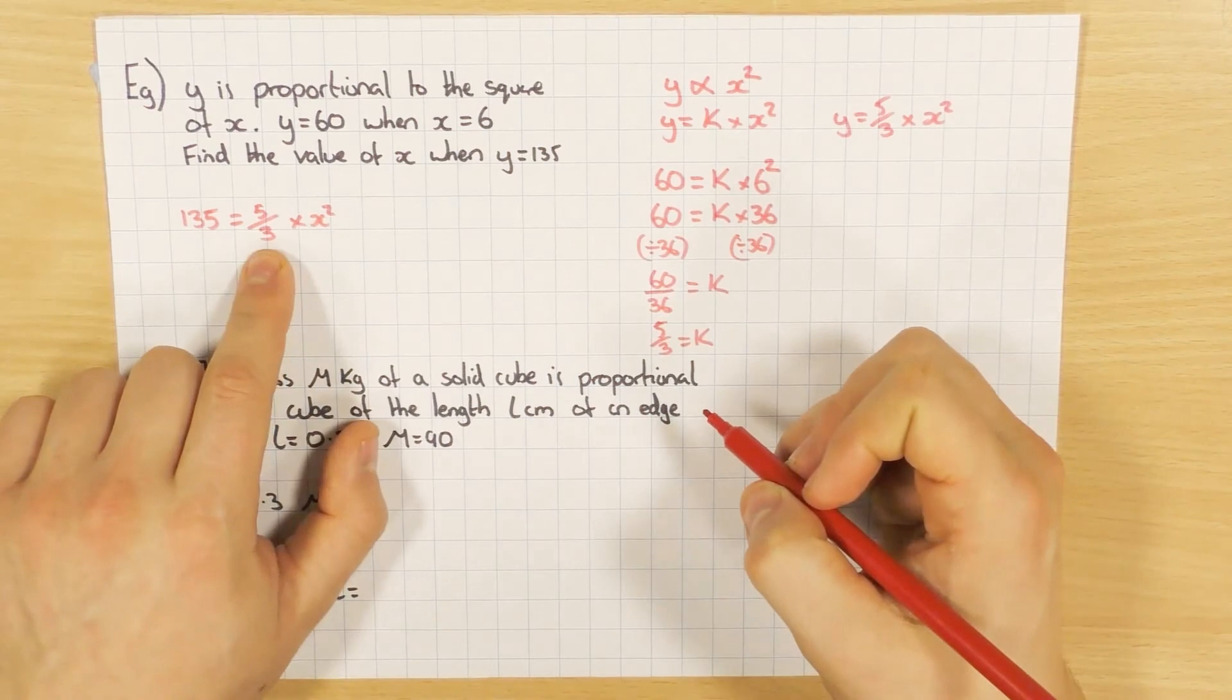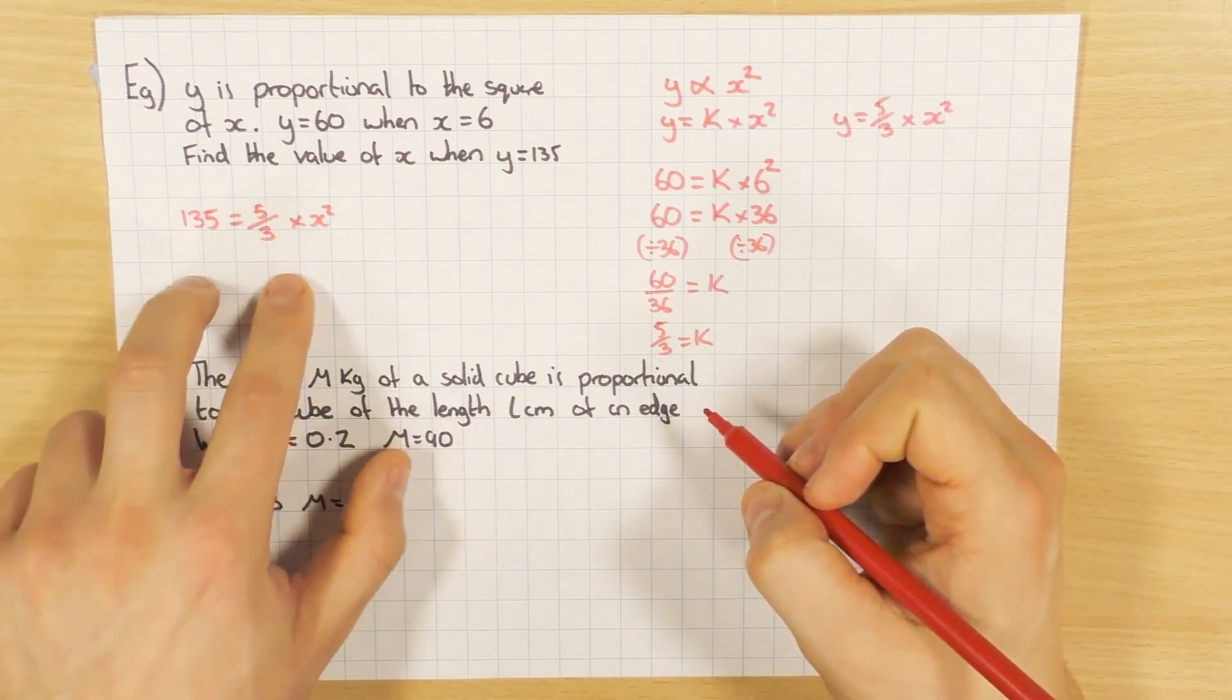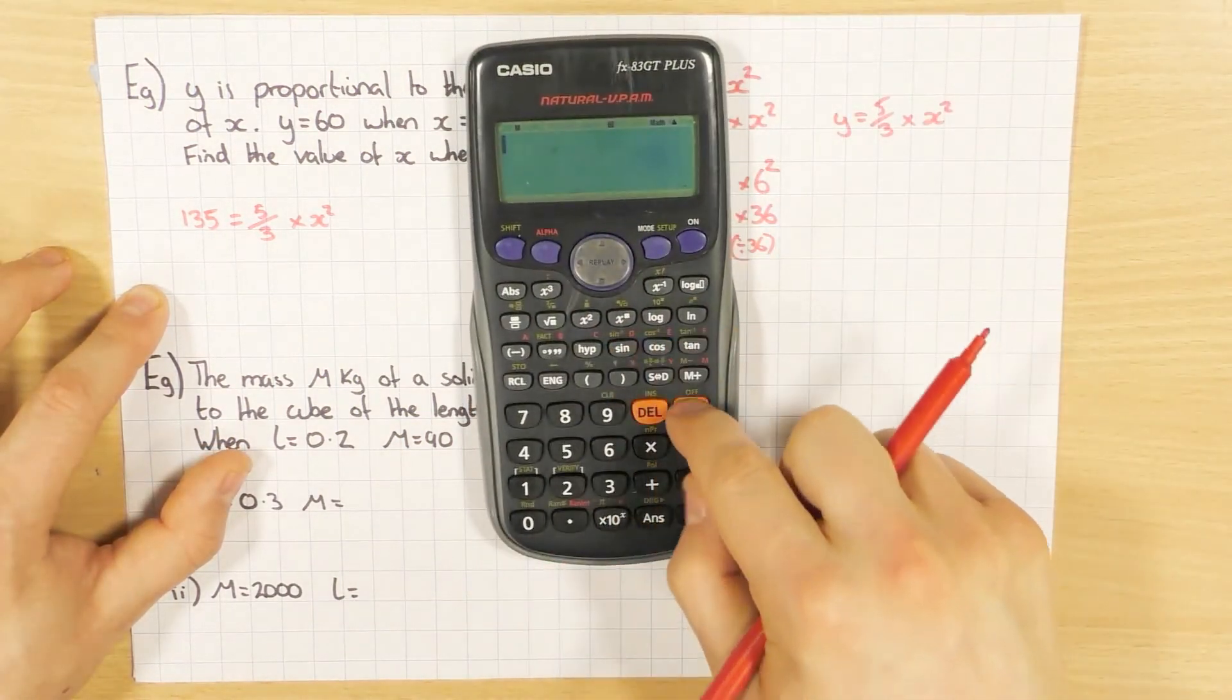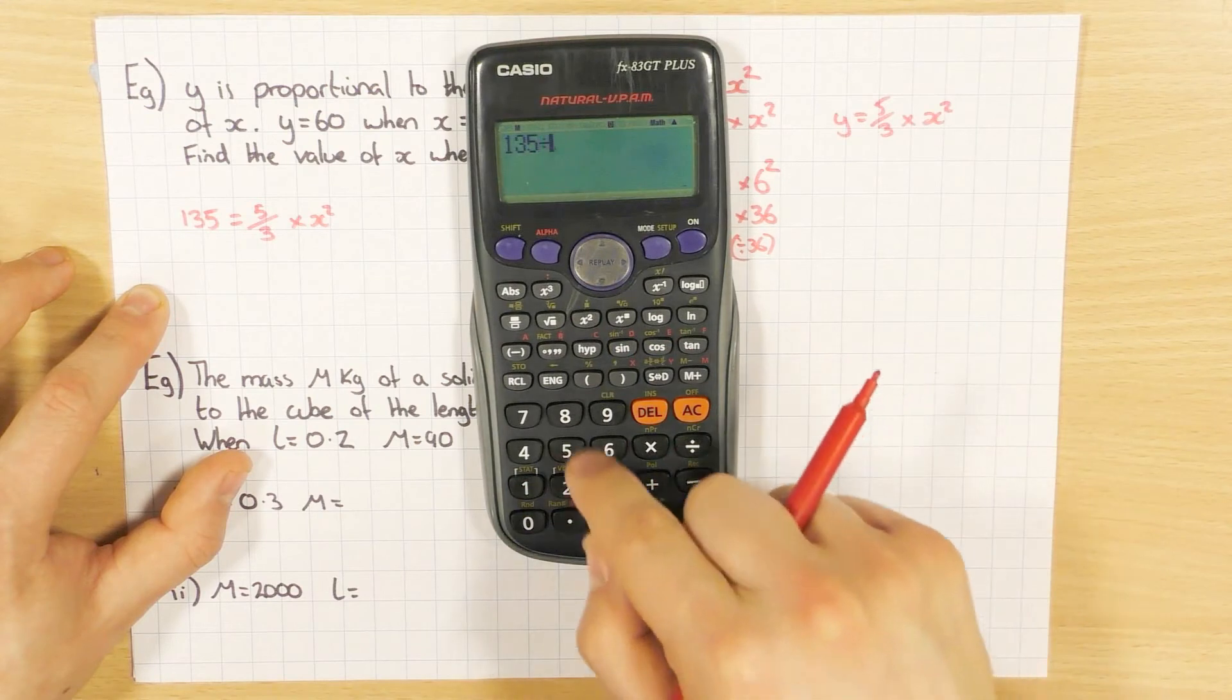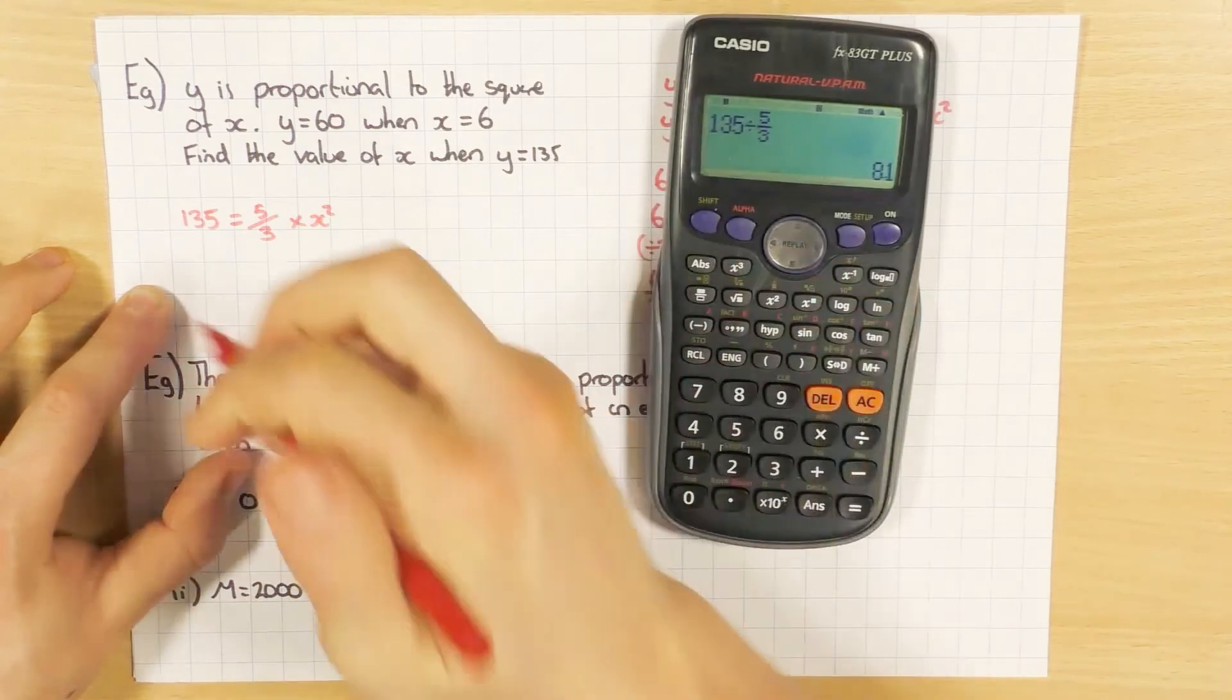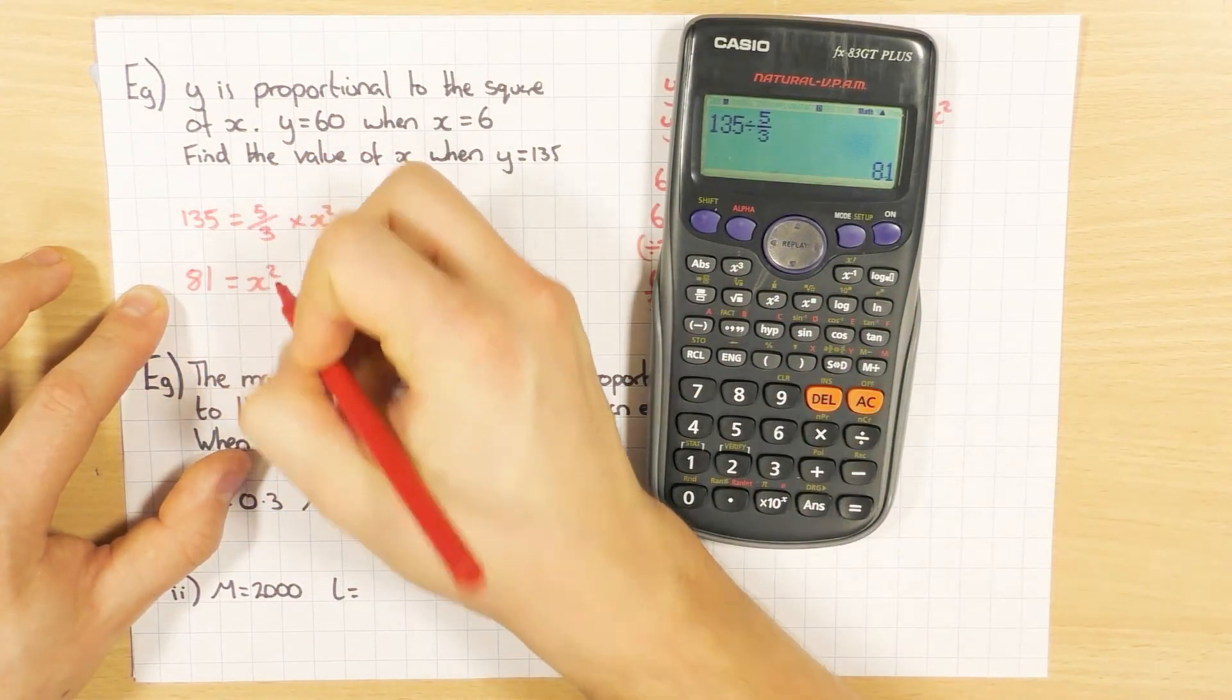So I want to get rid of that 5 over 3. At the minute it's timesing x squared. So I'm going to divide both sides by 5 over 3. So let's have a look at what that is. So 135 divided, I'm going to use my fraction button there. 5 over 3, 81. Lovely. 81 equals x squared.